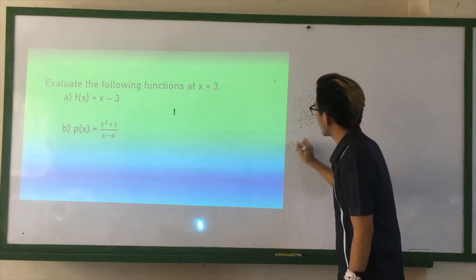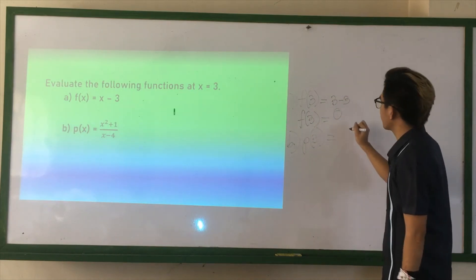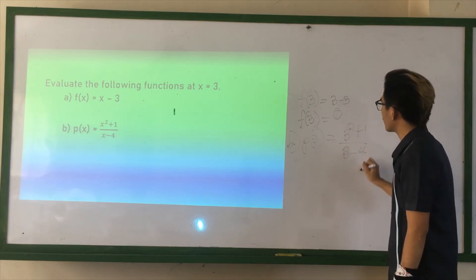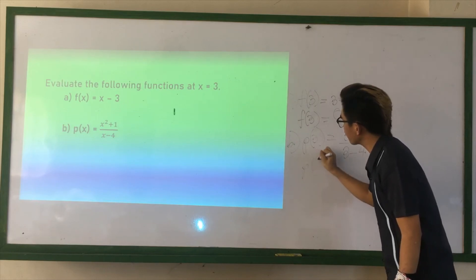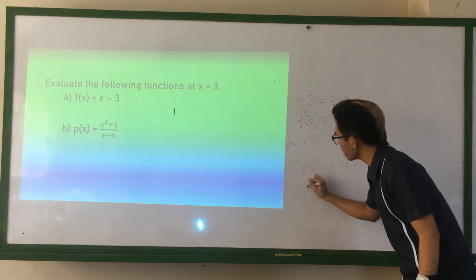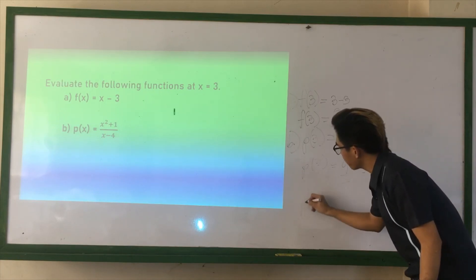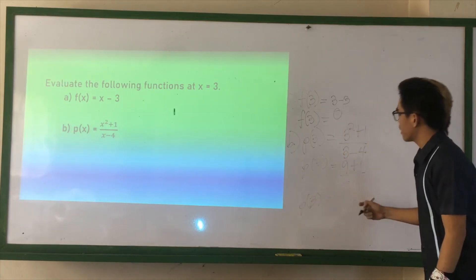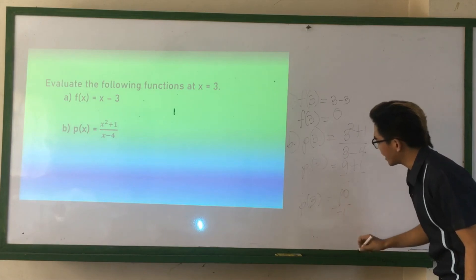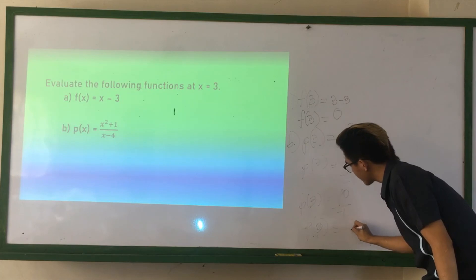For the second function, we replace G of X to 3. G of 3 equals 3 squared plus 1 over 3 minus 4. So, we have G of 3 equals 3 squared, that is 9 plus 1, over 3 minus 4, that is negative 1. G of 3, 9 plus 1, that is 10, over negative 1. To simplify, we have the final answer of G of 3 equals negative 10. That is very simple.